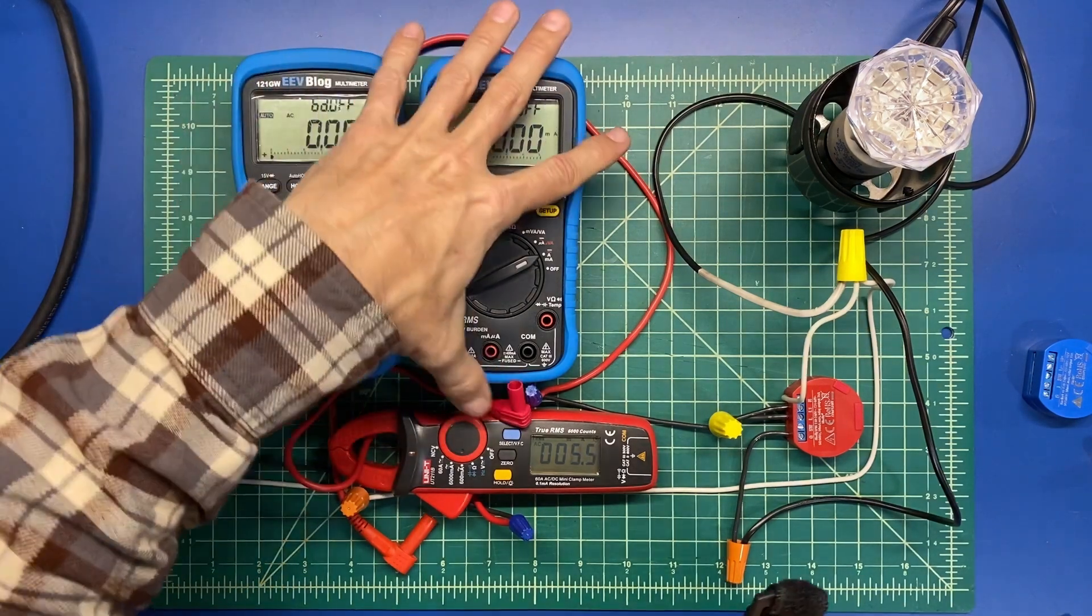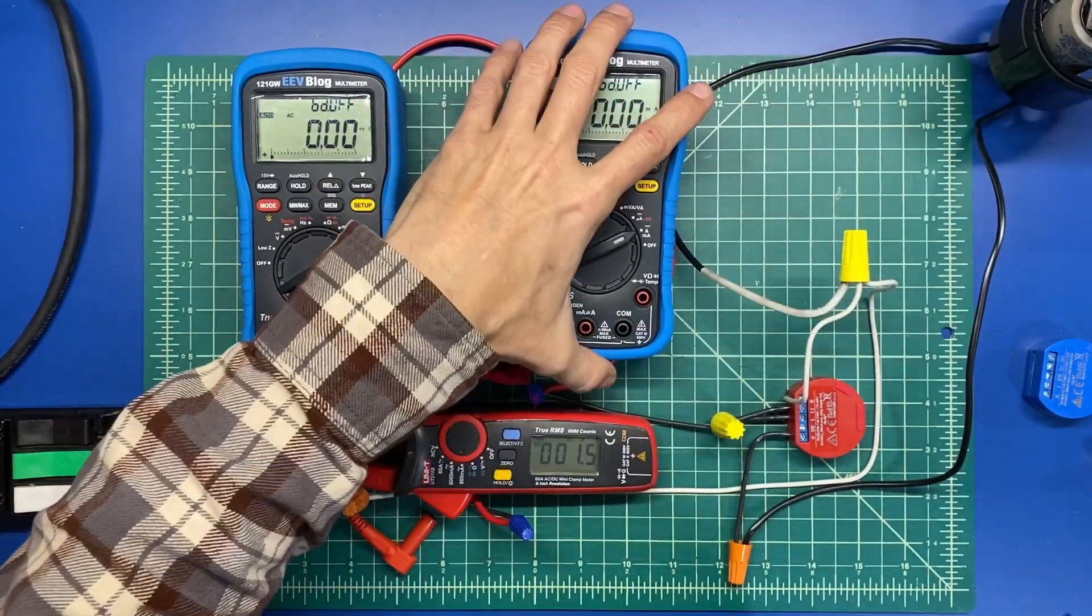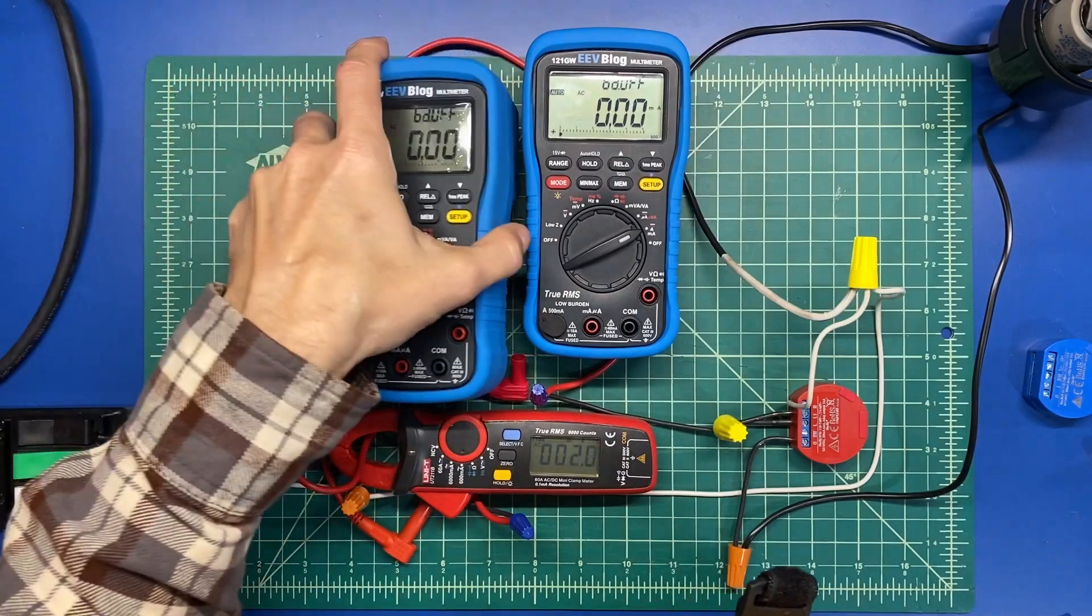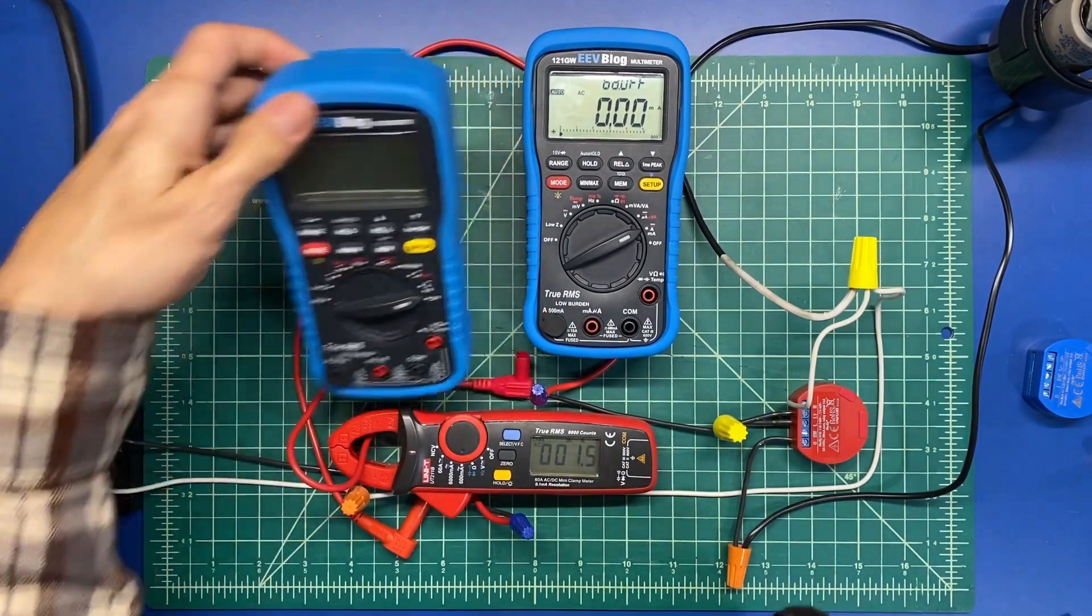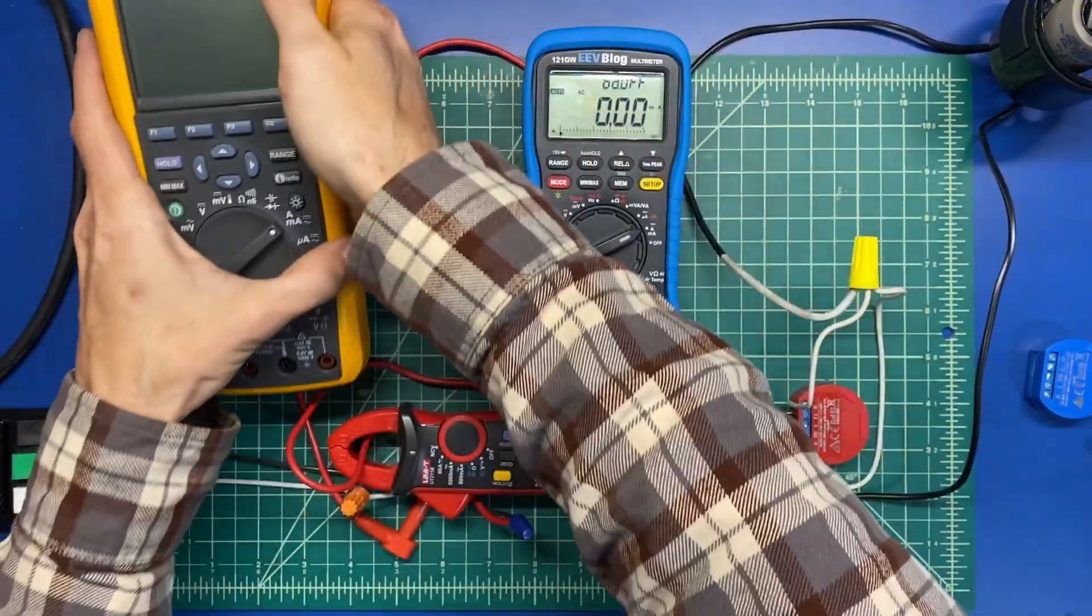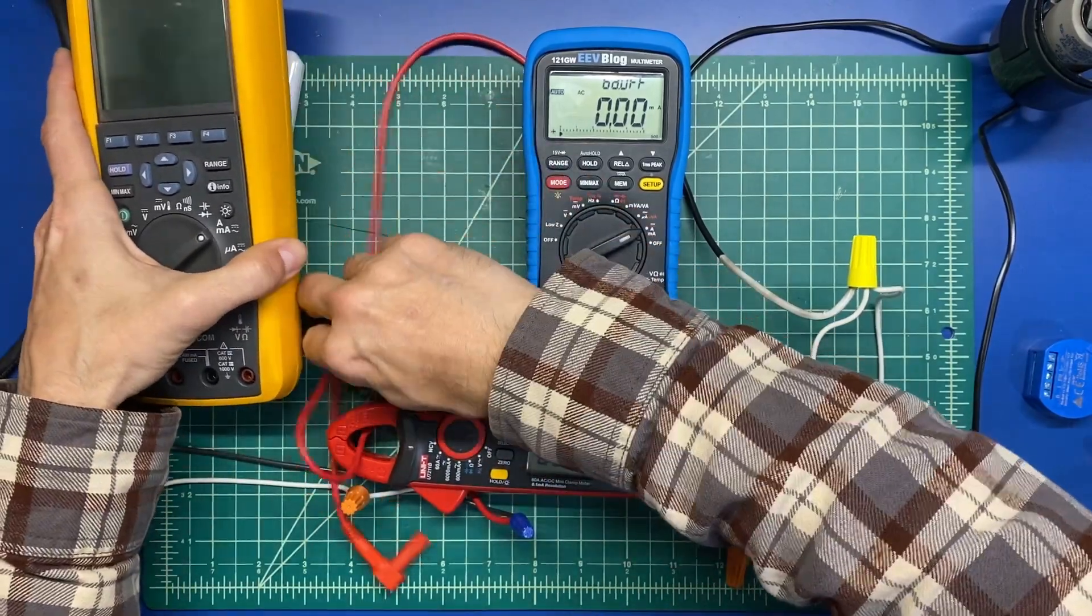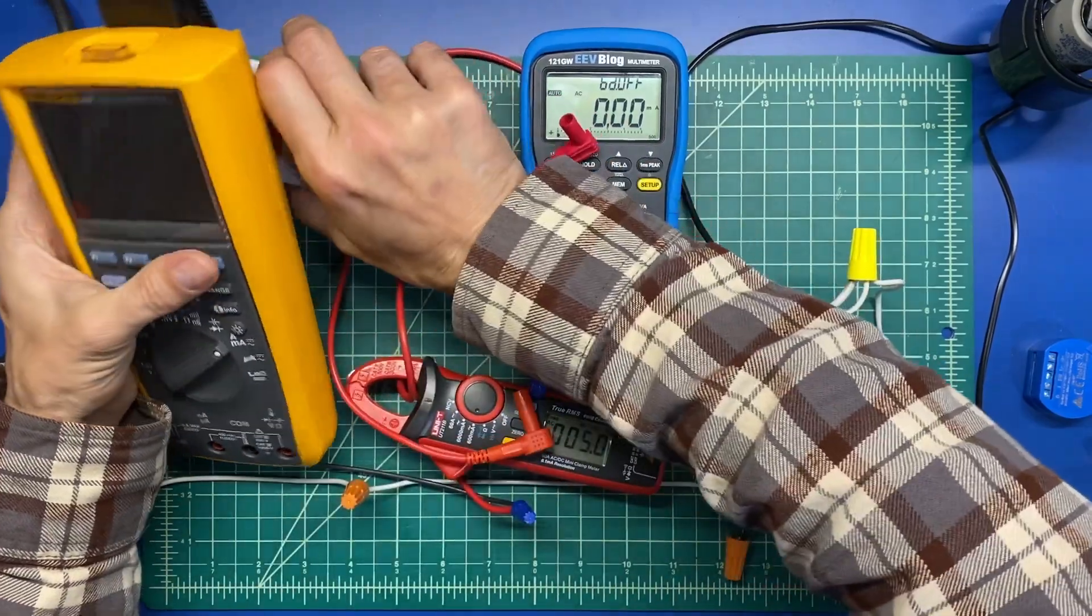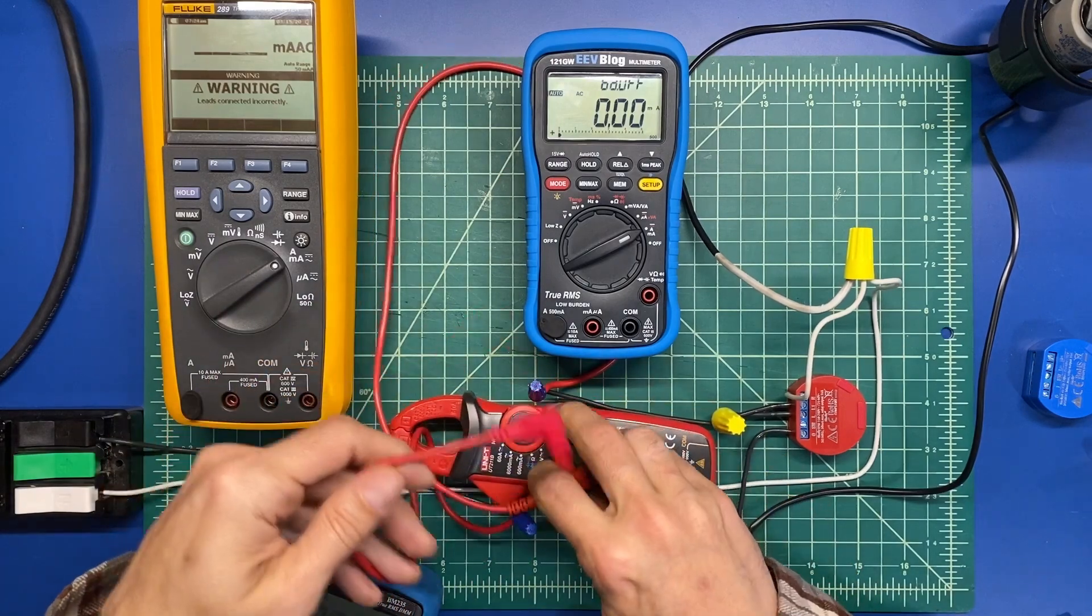I'm going to take the light bulb out. We don't need both of these in here. That was just to show the firmware. How does one, two, or three meters have no problem, yet others seem to have an issue?